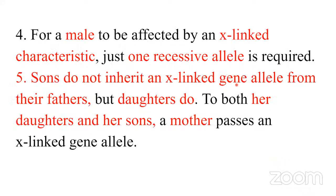Point number four: for X-linked characters, if a male has even one affected allele, it will cause disease, because males are XY — they only have one X chromosome. So whether the allele is recessive or dominant, one allele in a male causes disease. Point number five: for X-linked disease, sons inherit the X from their mother, and daughters inherit X from their father. So if a father is affected with an X-linked dominant disease, the daughter will be affected; if recessive, the daughter will be a carrier. The mother, being XX, can pass the disease to both sons and daughters.